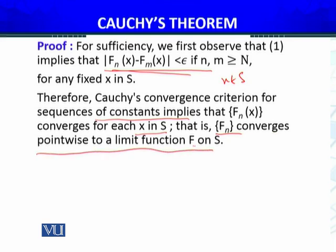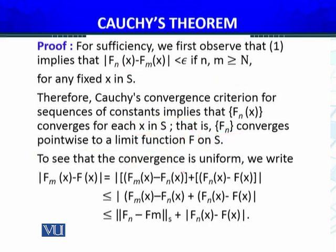Pointwise convergence तो हो गई। अब uniform convergence साबित करना है — वो भी easy है। To see that the convergence is uniform, we write |f_m(x) − f(x)|। इसमें f_n को add और subtract करते हैं, और फिर Cauchy criterion use करके absolute value की definition से इसे bound करते हैं।